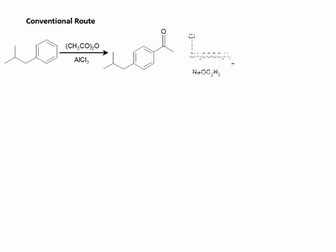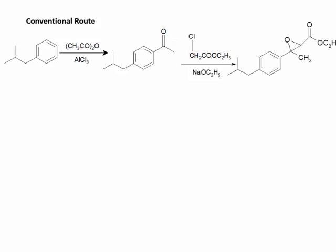It is then treated with chloroacetic acid. The lone pair on the oxygen attacks the carbon, and chlorine, being a weak leaving group, is released to give the product. In the product, the oxygen is present in a highly strained three-membered ring, and hence a bond-breaking process takes place, forming the corresponding aldehyde after hydrolysis.